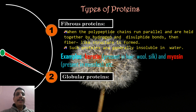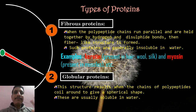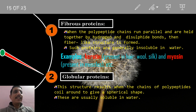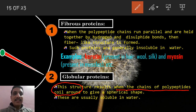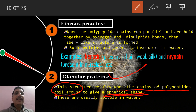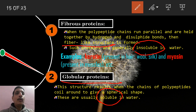The second type of protein is globular protein. Look at the name — fibrous protein has a fiber-like structure; globular protein has a globule-like structure. This results when the polypeptide chain coils around itself. When the polypeptide chain makes a coil around itself, we get a spherical-shaped structure called globular protein. These globular proteins are soluble in water, whereas fibrous proteins are insoluble in water.